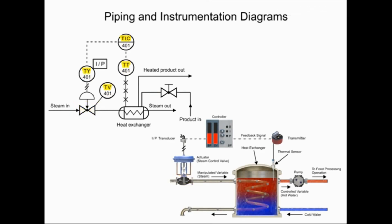In the top portion of the symbols is the functional identifier, and the first letter denotes the measured variable. The first letter of each functional identifier is the letter T, which defines the process of temperature control.